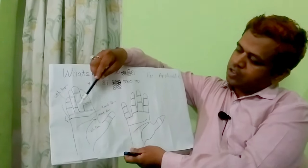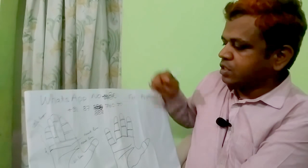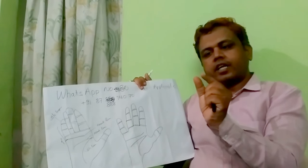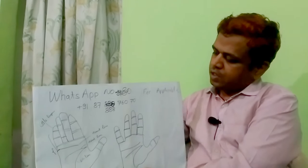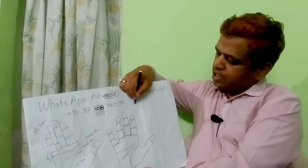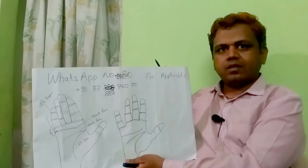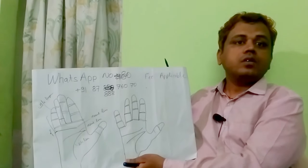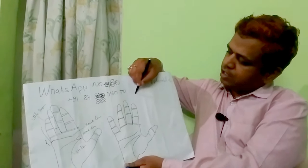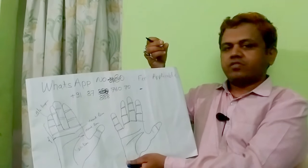If you look, there are different types of lines — there are very short lines also. If there is a very short line, you can see this line is very small and very thin. Such short lines do not signify the marriage line.